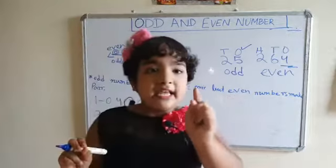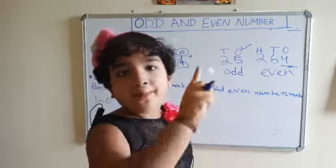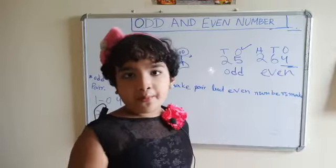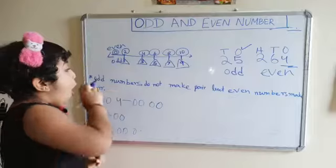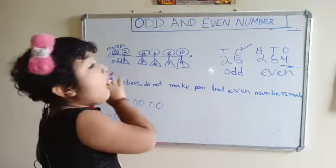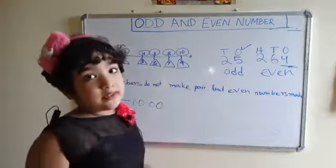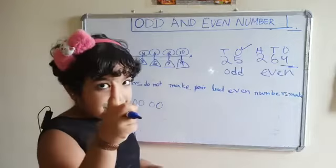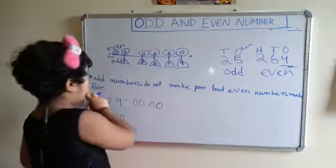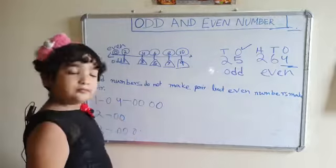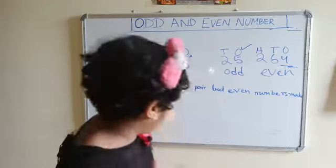In this subject, our main point is this: odd numbers do not make a pair, but even numbers make a pair.